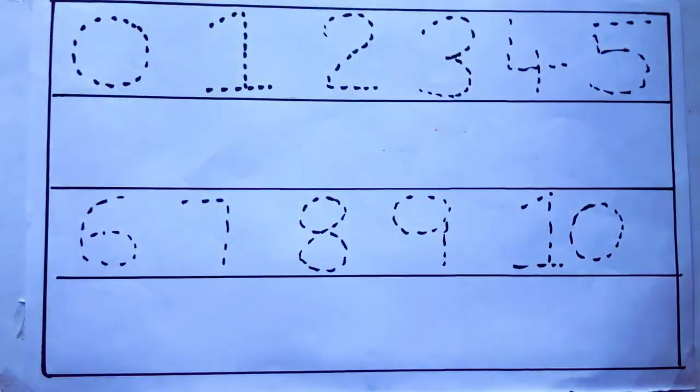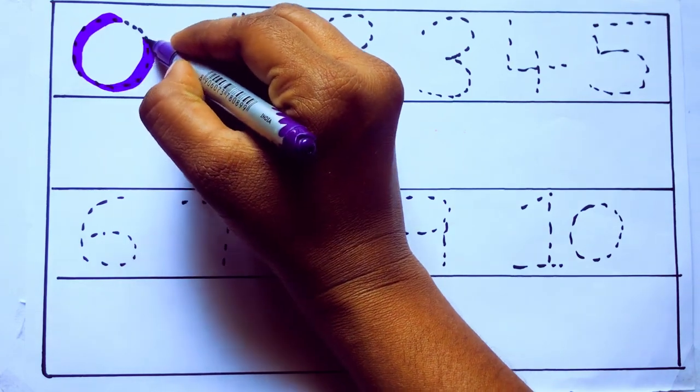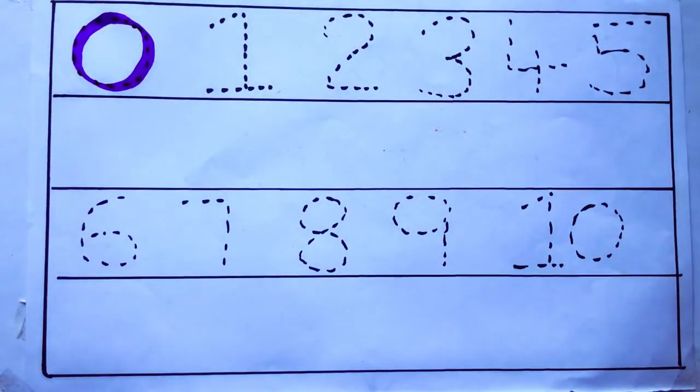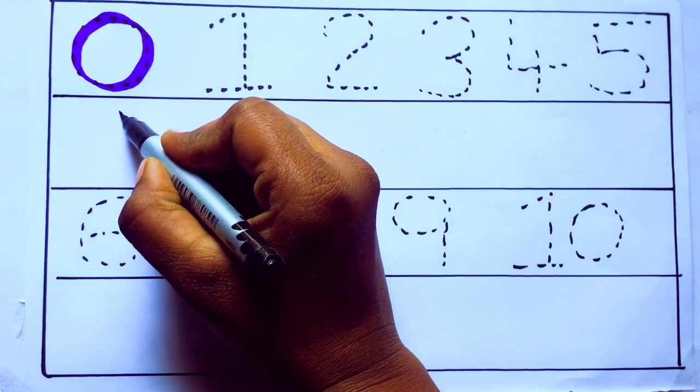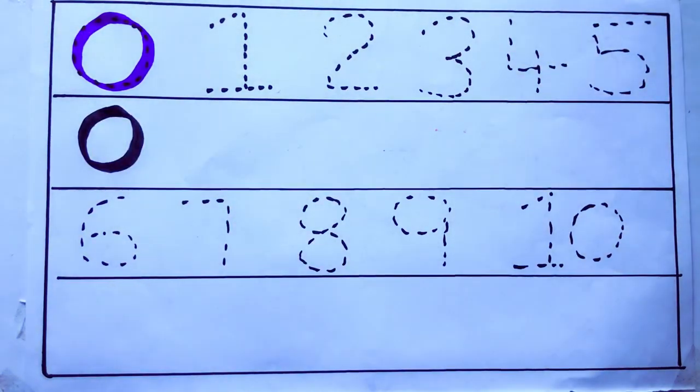Let's draw numbers. Violet color, 0, Z-E-R-O. 0, 0.